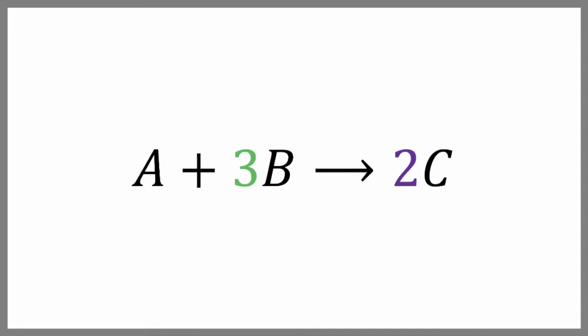But when our reactants and products have coefficients, it gets a little more difficult. Take a look at this example. We react one mole of A with two moles of B, and this produces two moles of C. We know that B decreases three times as rapidly as A does. We know that C is produced two times more rapidly than A decreases.